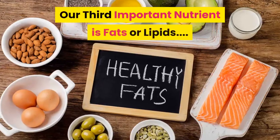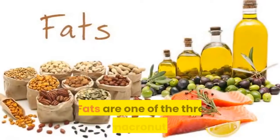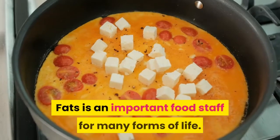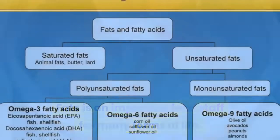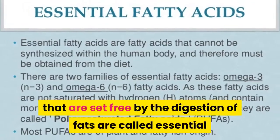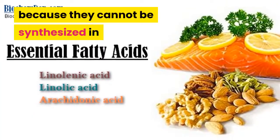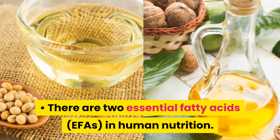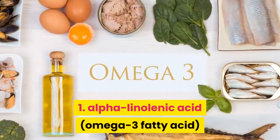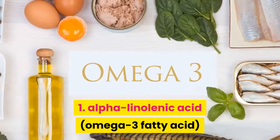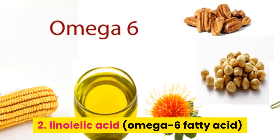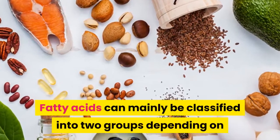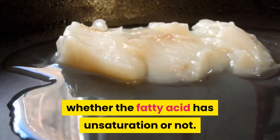Our third important nutrient is fats, or lipids. Fats are one of the three main macronutrients, along with carbohydrates and proteins. Fat is an important food source for many forms of life. Some fatty acids set free by the digestion of fats are called essential because they cannot be synthesized in the body from simpler constituents. There are two essential fatty acids in human nutrition: 1. Alpha-linolenic acid (omega-3 fatty acid), 2. Linoleic acid (omega-6 fatty acid). Fatty acids can mainly be classified into two groups depending on whether the fatty acid has unsaturation or not.